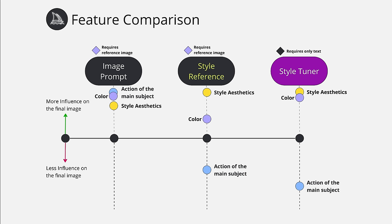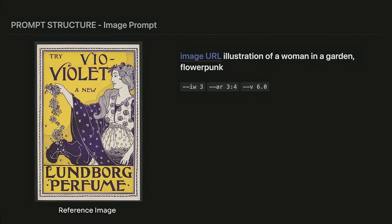Next, let's compare image prompts with style reference. Before the introduction of style reference, style could be duplicated using only image prompting. However, it did not completely solve the problem. Style reference is different from image reference — it functions somewhat in between image prompting and style tuner. Image prompting with maximum image weight produces images that closely resemble the reference image, particularly the color, action of the main subject, text placement, style and other details. For example, I'm going to use this image as an image prompt.